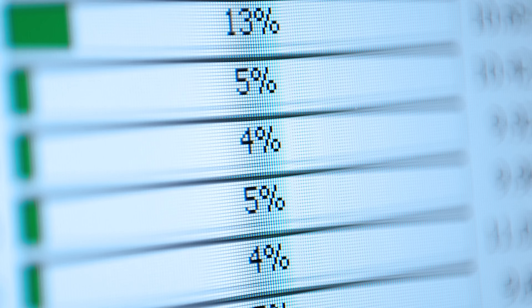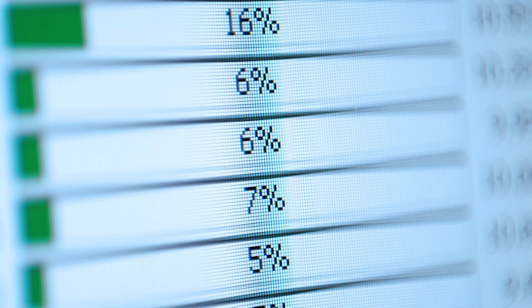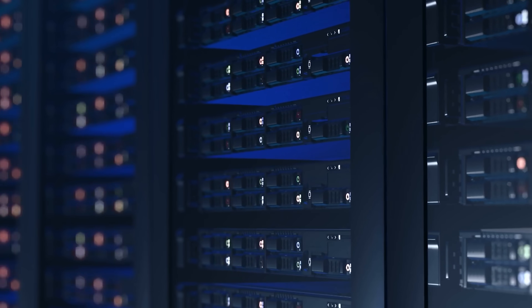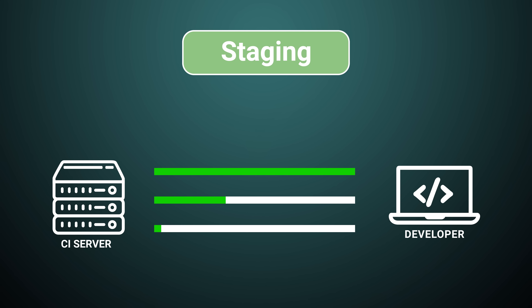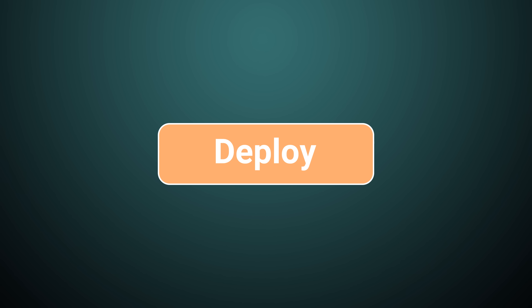The CD server then packages the software into a deployable format and deploys it to a staging environment. The staging environment is a replica of the production environment, allowing developers to test the software in a real-world scenario. If the software passes all the tests in the staging environment, then it's ready for deployment to the production environment. Continuous delivery ensures that the software is always in a releasable state, reducing the time it takes to release new features and bug fixes.